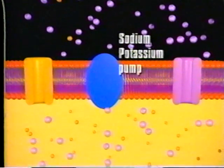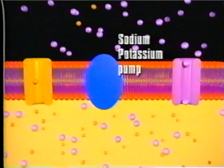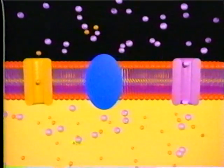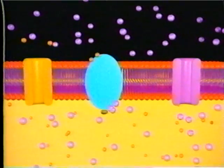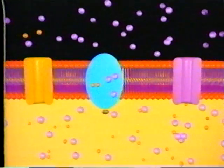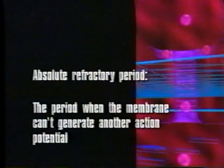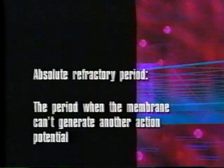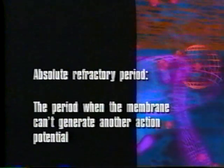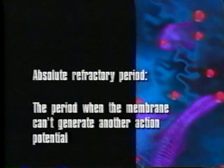The sodium-potassium pump restores normal ion concentrations by ejecting the sodium ions and reclaiming lost potassium ions. The voltage-regulated sodium channels can't reopen until the membrane potential reaches minus 60 millivolts. The period when the membrane can't generate another action potential is called the absolute refractory period.